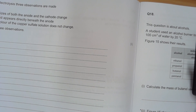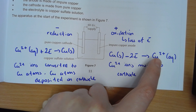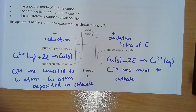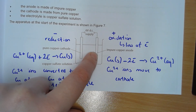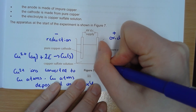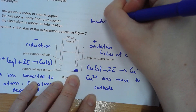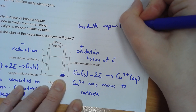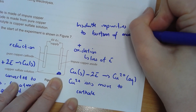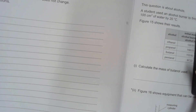The next observation to explain is that a solid appears directly underneath the anode. The copper anode is impure, so it contains impurities. The copper converts to Cu²⁺ ions and moves across, but the impurities remain. Some impurities are soluble and go into solution, but the insoluble impurities fall to the bottom as the anode breaks apart - this is often called sludge.